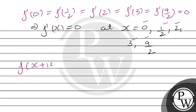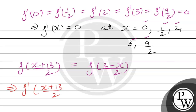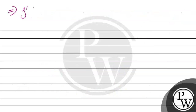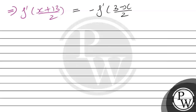From the given condition f((x+13)/2) = f((3-x)/2), we differentiate both sides with respect to x. The left side gives (1/2)·f'((x+13)/2), and the right side gives (-1/2)·f'((3-x)/2). After the 2's cancel, this implies f'((x+13)/2) = -f'((3-x)/2).